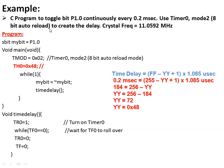A mode 2 example: toggle port 1.0 every 0.2 milliseconds using timer 0 in mode 2. The time delay is 0.2 ms, and since it is 8-bit mode, the maximum value is 255 (0xFF). With a crystal frequency of 11.0592 MHz, each tick is 1.085 microseconds. The calculated value to load in TH is 0x48 (72 in decimal). The code uses an infinite loop demonstrating the mode 2 auto-reload operation.